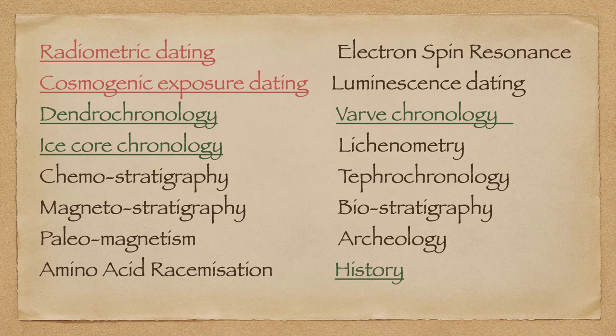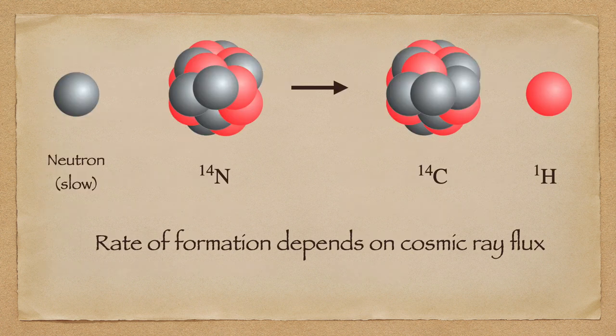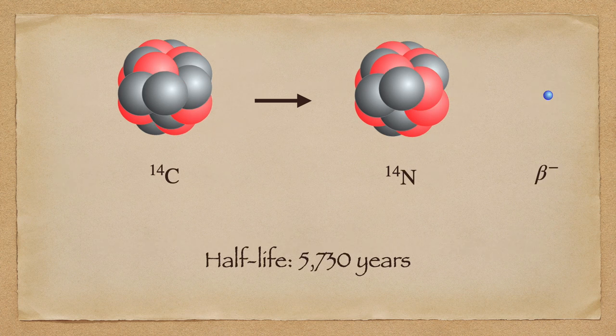Radiocarbon dating is a particular form of radiometric dating. More specifically, it is a form of cosmogenic isotope dating because the vast majority of carbon-14 in the Earth's system is produced by the impact of cosmic rays. And as soon as carbon-14 atoms are created, they start undergoing radioactive decay via beta-particle emission into nitrogen-14.